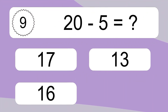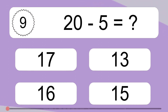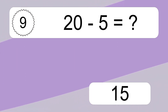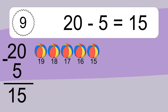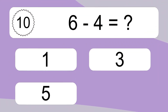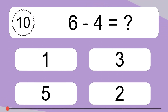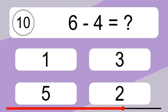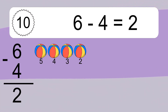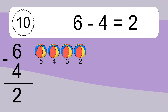20 minus 5 equals what? 6 minus 4 equals 2. Let's count it. 5, 4, 3, 2.